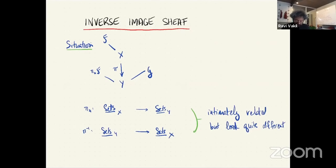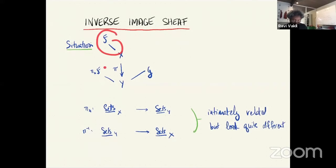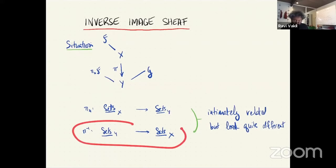Now comes the new thing: the inverse image sheaf, which is somehow the partner to the push-forward sheaf. I find this more complicated when I first see it than I would have guessed, so I've left it for the end. If we have a map of topological spaces π from X to Y, and we have a sheaf on X, we can make a push-forward sheaf on Y — a functor from sheaves on X to sheaves on Y.